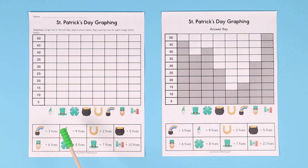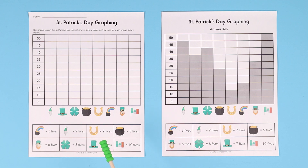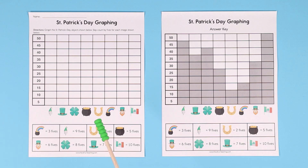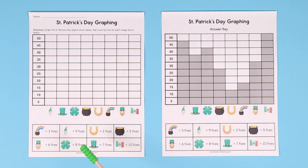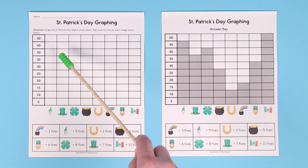The next one is a hat. The hat equals seven fives. So your students can either skip count by fives seven times: 5, 10, 15, 20, 25, 30, 35 — and they'd color up to 35. Or if they know their multiplication facts, they can do seven times five equals 35 and color up to 35.